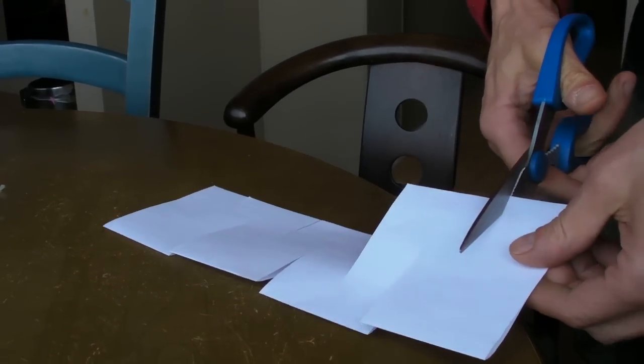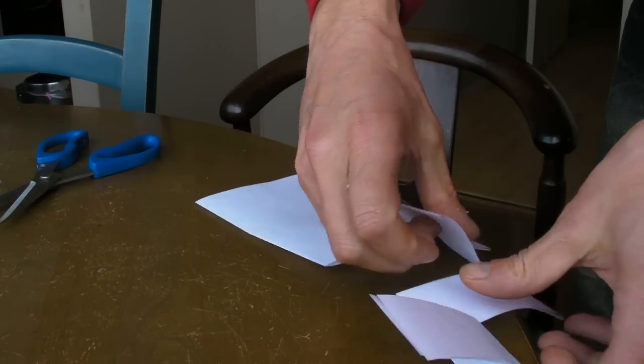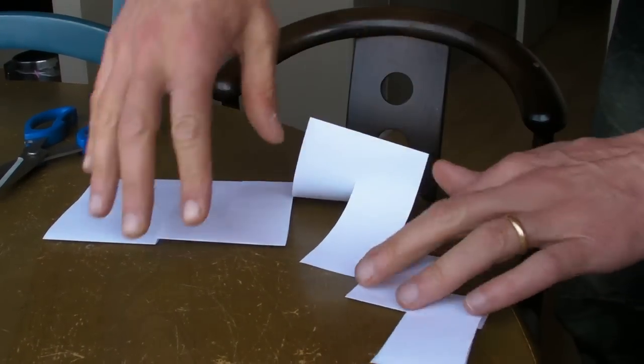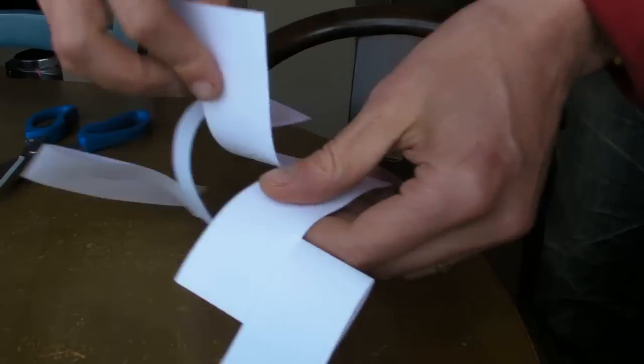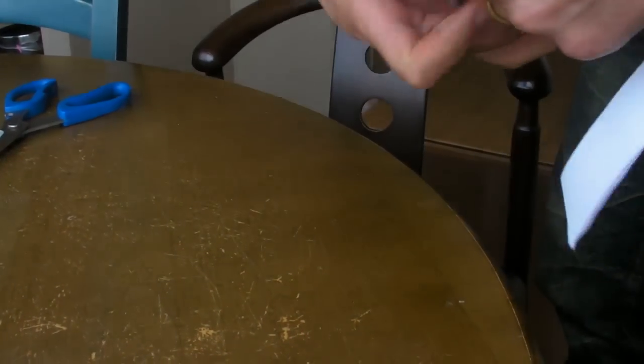And once you've cut it all like that, then you fold it, and you fold it in a kind of spiral. So that it forms this kind of zigzag. Which looks a bit like lightning.